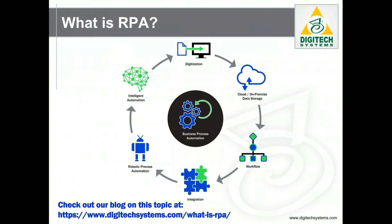A common BPA implementation might include all of the elements listed in this diagram, such as digitization of paper-based records, some type of cloud or on-premise repository for data, workflow to automatically route information through the steps of the business process, integration between two or more line-of-business applications, and robotic process automation, or RPA, to use electronic user accounts to perform tasks previously done by a human worker, such as data entry or correlating information between systems.